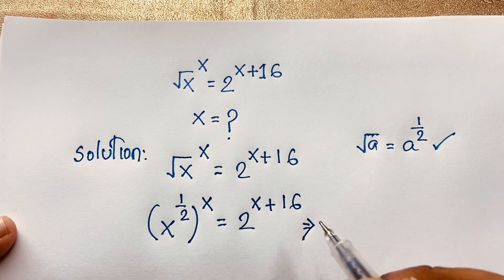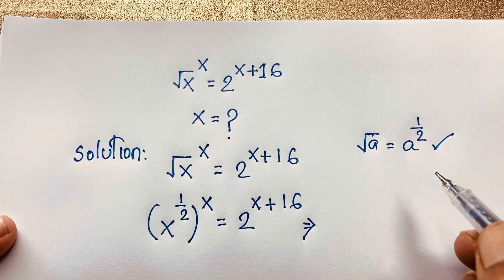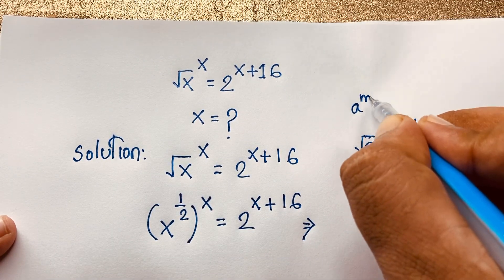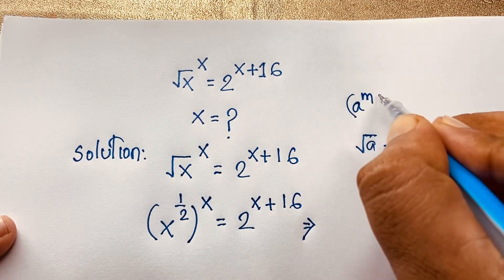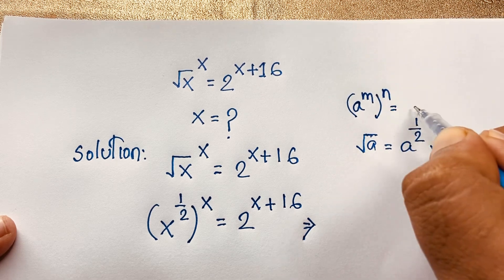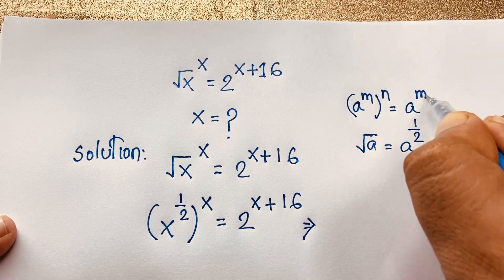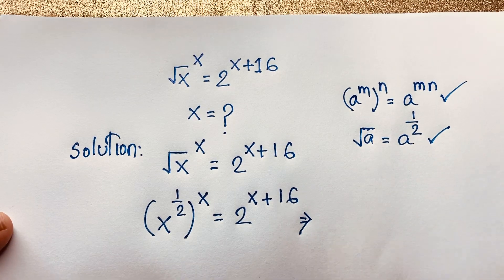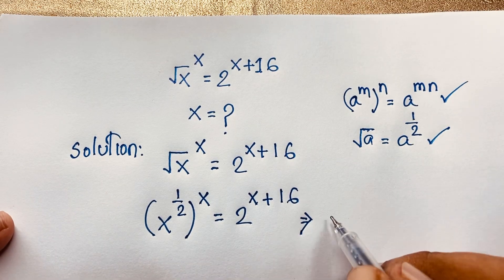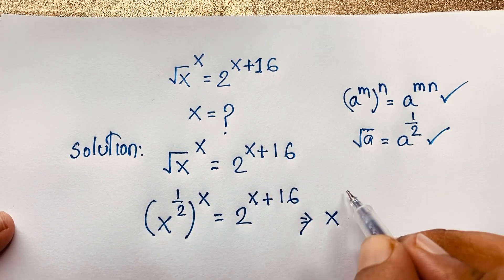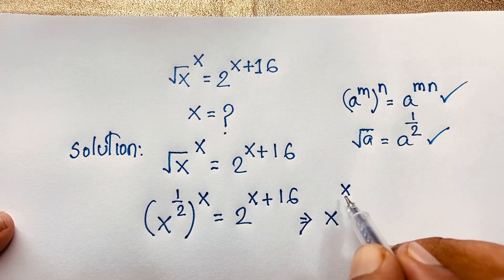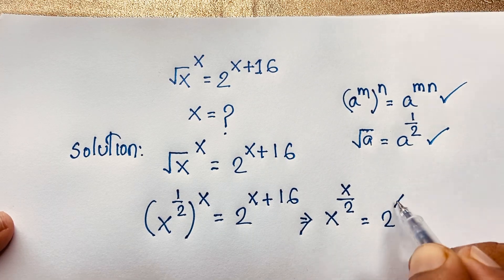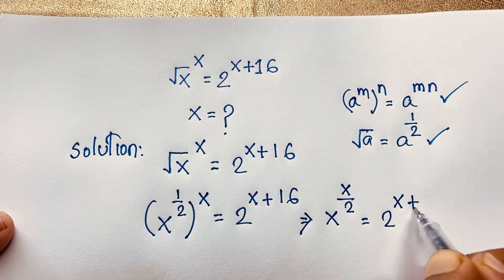Now, according to the exponential formula, we know that a to the power m, bracket power n, equals a to the power m times n. If I apply this math formula here, it becomes x to the power x times 1 over 2, which is x over 2, is equal to 2 to the power x plus 16.